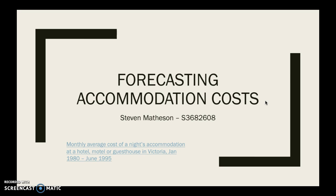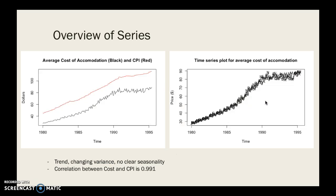Let's have a quick look at the dataset to start. On the left-hand side in black, we have the average cost of accommodation in Victoria, and in red, we have a predictor series which is the Australian CPI. We would obviously expect that to be highly correlated with the average cost of accommodation.